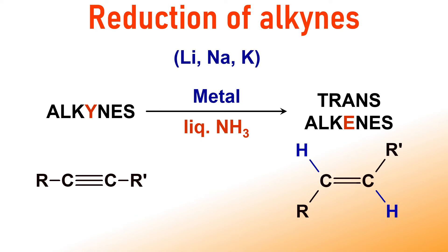Sodium metal is commonly employed in this reaction, along with lithium and potassium. This reaction is the partial hydrogenation of alkynes selectively to trans-alkenes through anti-addition of hydrogens to the triple bond. Look at the hydrogens — they are on the opposite sides of the double bond in the product alkene.